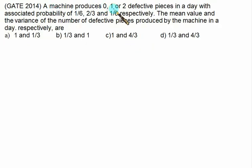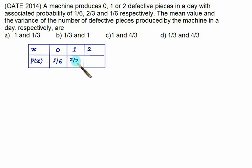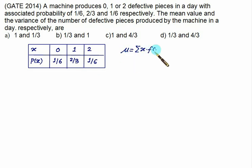In the next question, a machine produces 0, 1, or 2 defective pieces in a day with associated probabilities of 1 by 6, 2 by 3, and 1 by 6. We have to find the mean and the variance. We prepare a table first where x represents 0, 1, 2 defective pieces and P(x) is 1 by 6, 2 by 3, and 1 by 6 respectively. This sum equals 1, which is confirmed. We calculate mu equals sigma of x into f(x).